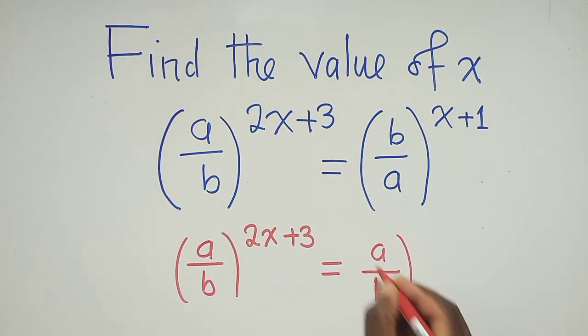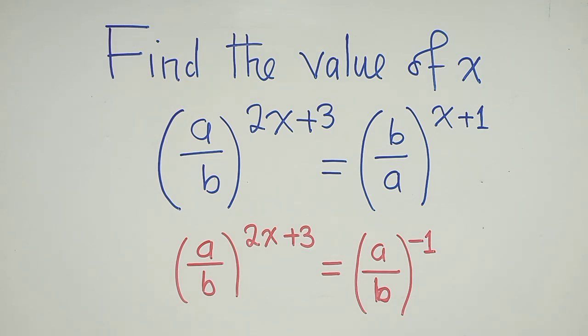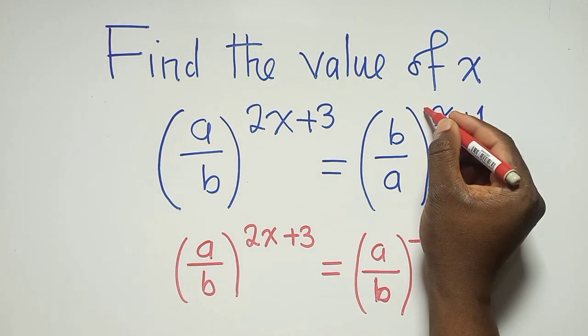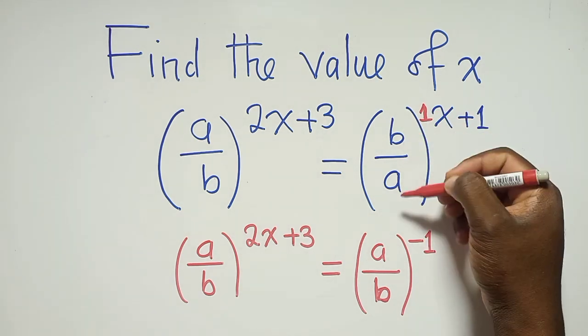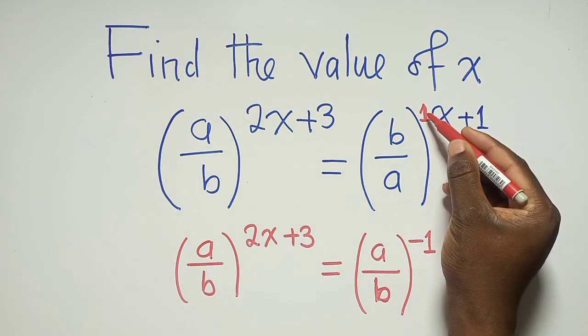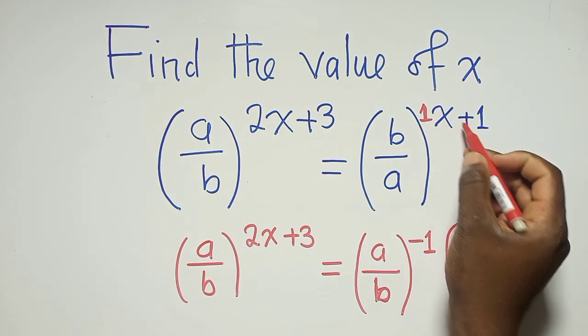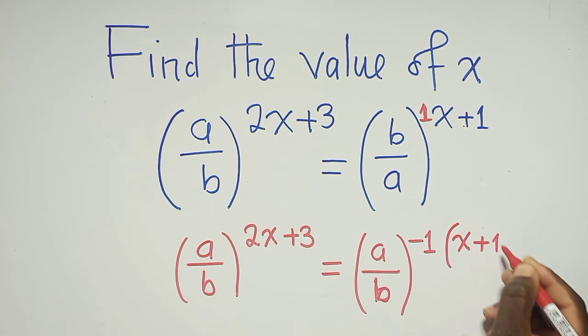So to show that we have flipped this, we are going to put a power negative inverse. So we know that there is a power negative 1. We know that there is a 1 here. So since we have made those movements, this power 1 here will turn to a negative power. And then this power, we know that power to power we multiply. So we shall put x plus 1 here.